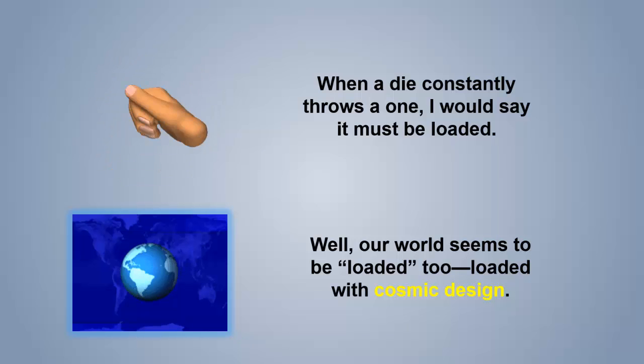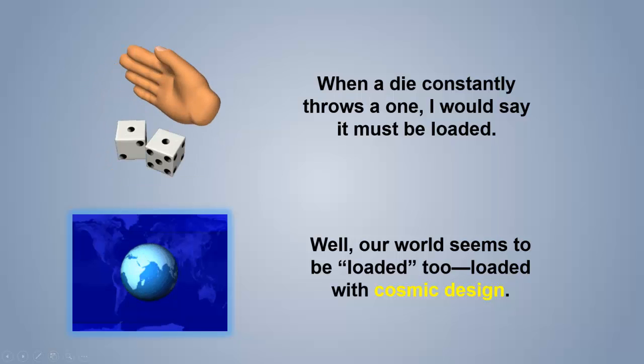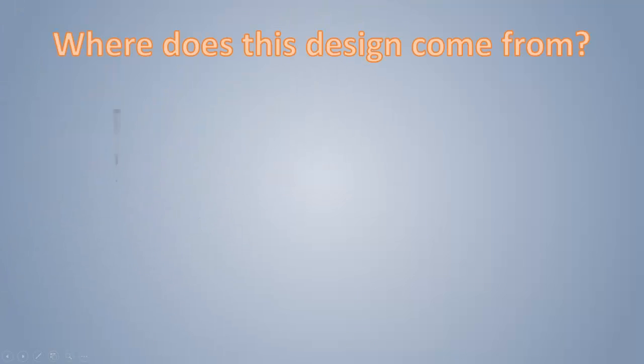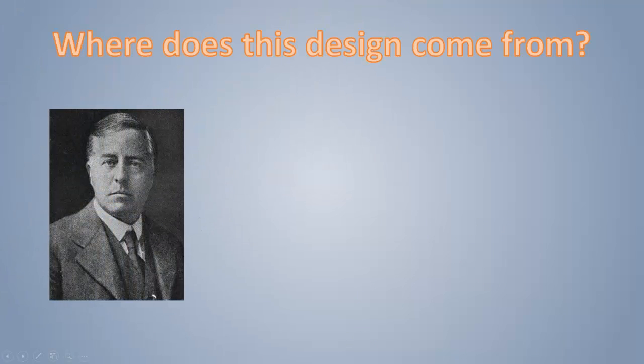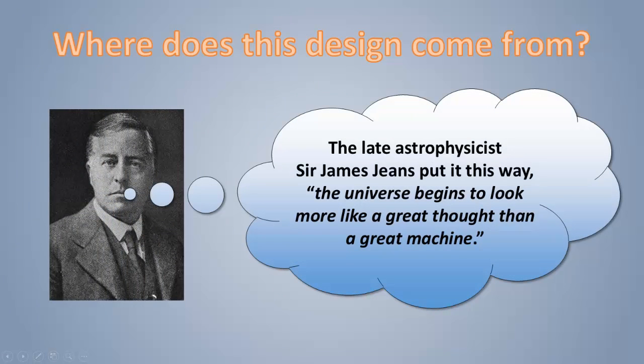The properties of carbon. Where do they come from? Where does this design come from? I think it is said the best by the late astrophysicist Sir James Jeans. The universe begins to look more like a great thought than a great machine. It is such a complicated thought in the background of our universe that only that can explain why there is life.